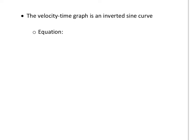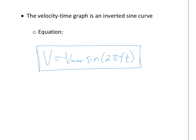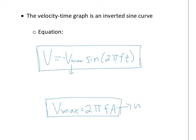If you know calculus, the derivative of cosine is negative sine, so the velocity-time graph is an inverted sine curve. The equation for this is velocity equals negative V-max times sine of 2 pi f t. This is your maximum velocity. Know that V-max equals 2 pi f A, where A is amplitude and f is frequency.